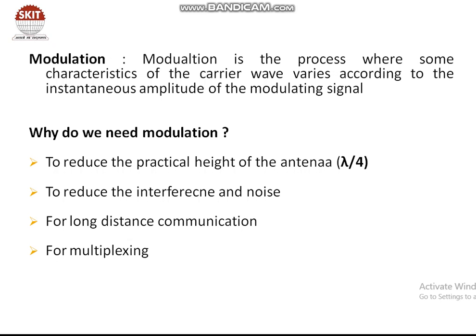Why do we need modulation? We need modulation to reduce the practical height of the antenna. The height of the antenna is inversely proportional to frequency — it is approximately lambda/4 or lambda/2 depending on impedance matching. If we transmit a high frequency signal, we need a low antenna height, but transmitting a low frequency signal would require an impractically large antenna. Also, at high frequency there is low interference and low noise, making it suitable for long distance communication and multiplexing. That is why we perform modulation before transmission.